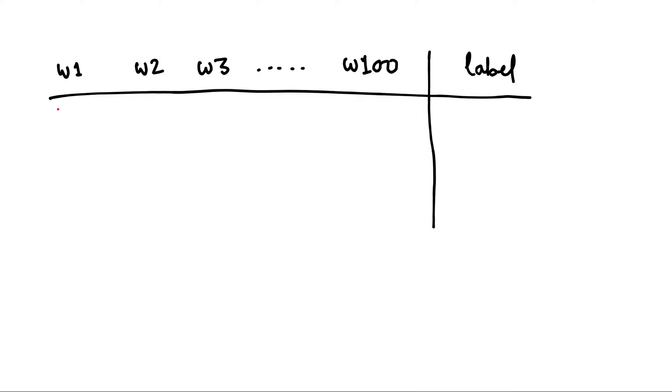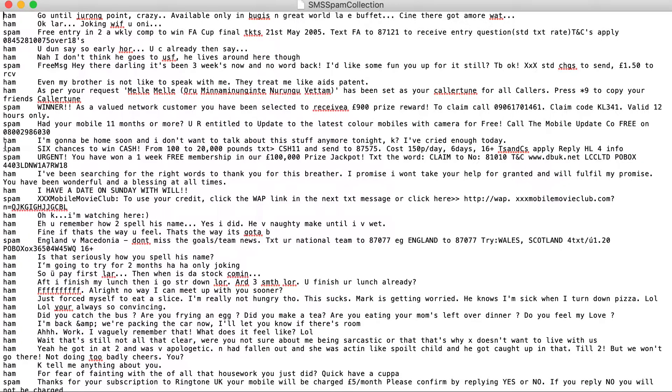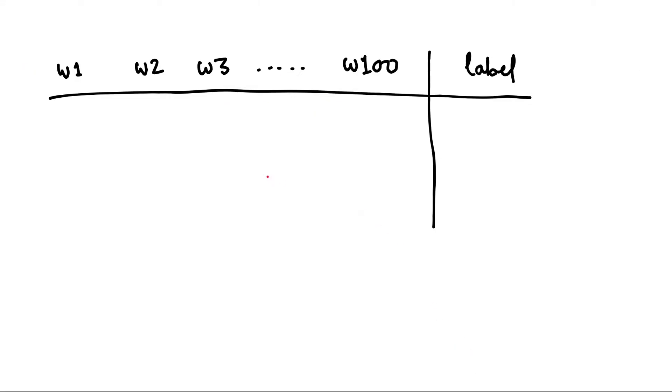And we have a list of documents. By documents we mean messages. So in our SMS spam collection database, every row corresponds to one document. So each message will have some words. So let's say we read the complete dataset and we figured out that there are 100 unique words. Then to represent the first message, we will see how many times W1 has occurred in this message - let's say zero. How many times W2 has occurred in this first message - let's say two. How many times W3 has occurred - let's say zero, and so on.